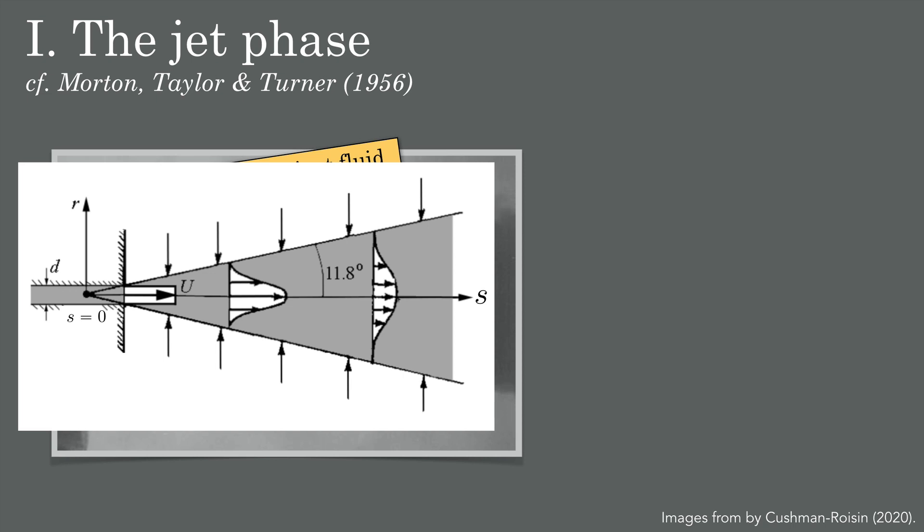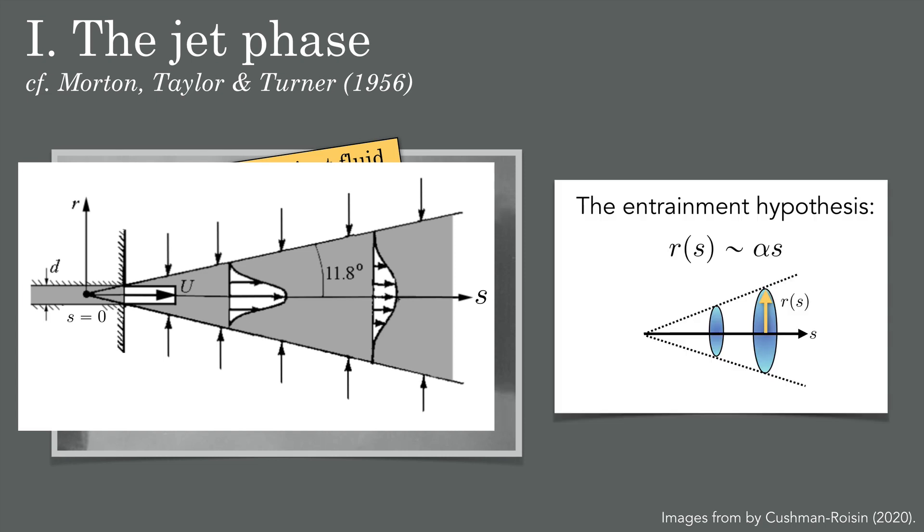However, lab experiments show that the envelope containing the jet is almost always in the shape of a cone, and in fact, for the case of a jet, the opening angle is usually around twice 18.8 degrees. This, in essence, is what we call the entrainment hypothesis: that the radius of the jet, R, is proportional to the distance along the center line, S, with this α constant being around 0.2 for many jets.